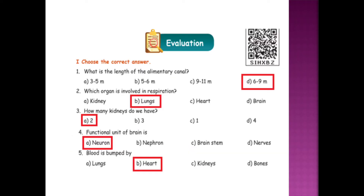Choose the correct answer. First question: What is the length of the alimentary canal? Options: 3 to 5 meter, 5 to 6 meter, 9 to 11 meter, 6 to 9 meter. The answer is D — 6 to 9 meter, because it consists of many specialized divisions.